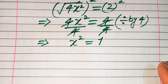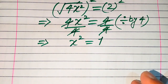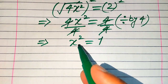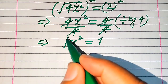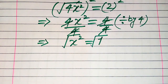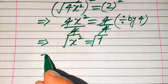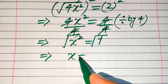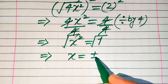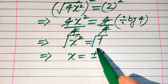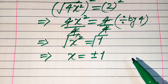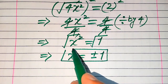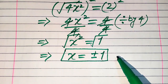We are solving for the values of x, so to remove this square sign we need to take a square root on both sides of this equation. This square and this square root cancel out and we get x equals plus or minus 1. When we apply the square root sign on both sides we write the plus or minus sign on the right hand side.